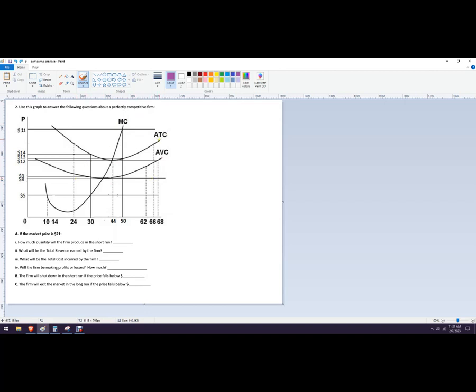So the price is $21. We're going to follow that right over here and that's where it hits marginal cost. Well why do we care about that? Well that is profit maximizing quantity, or sometimes said is profit maximizing output. So it says how much quantity will the firm produce in the short run? It's going to be where MR equals MC, that happens right here.